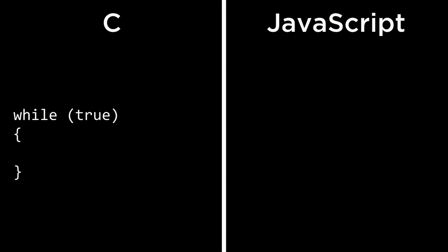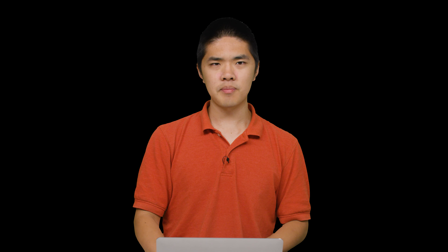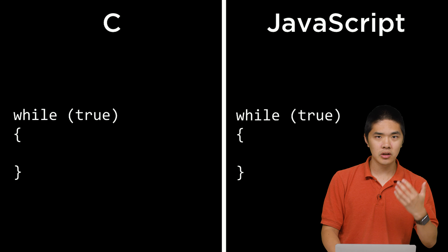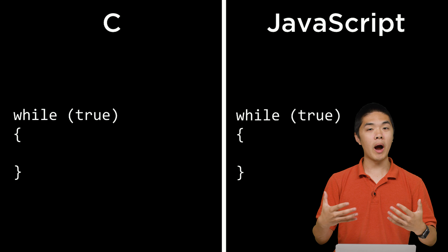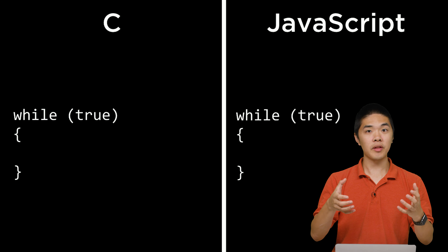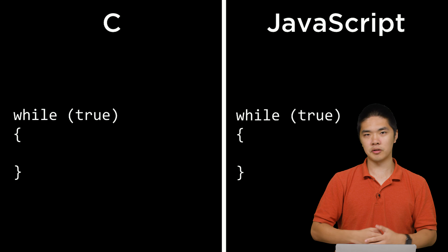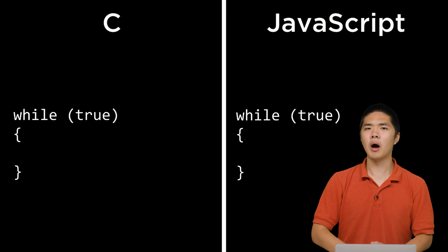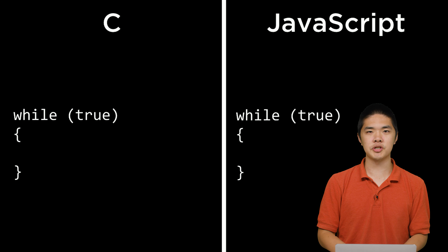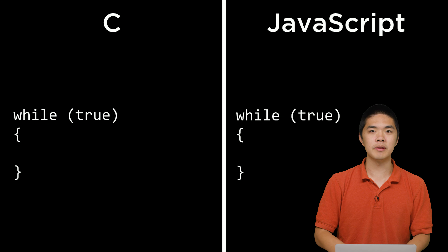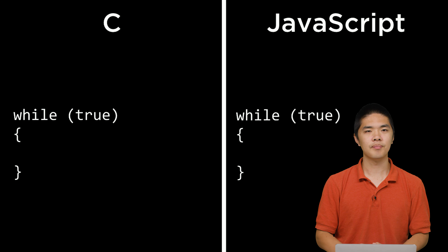A while loop in C that ran forever was just: while (true). In JavaScript, while loops look identical — while followed by the condition in parentheses, whether it's true for an infinite loop or some Boolean expression that's only true a finite number of times.